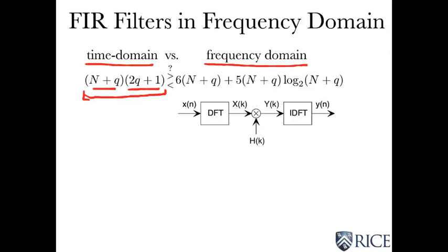Now the number of computations for length n input in the time domain is given by this. We have n plus q output values we have to compute and the complexity for each was 2q plus 1. The formula for the frequency domain approach is rather interesting. So you see the term over here that relates to the transforms.